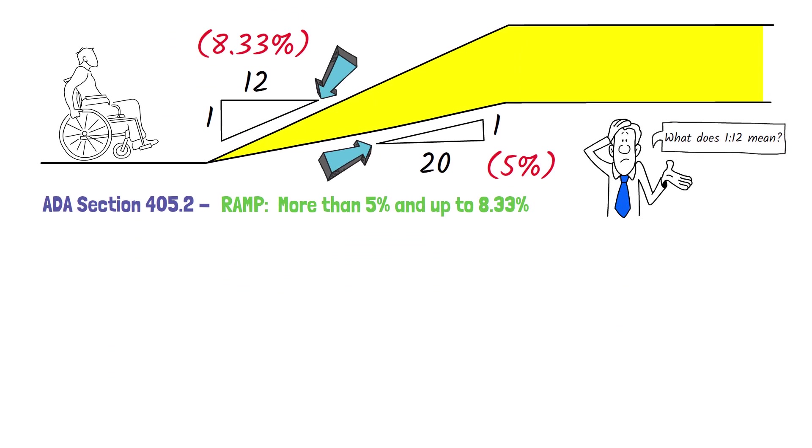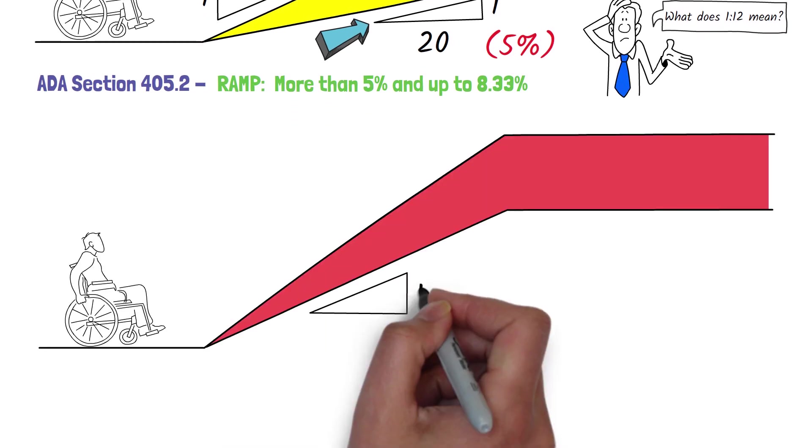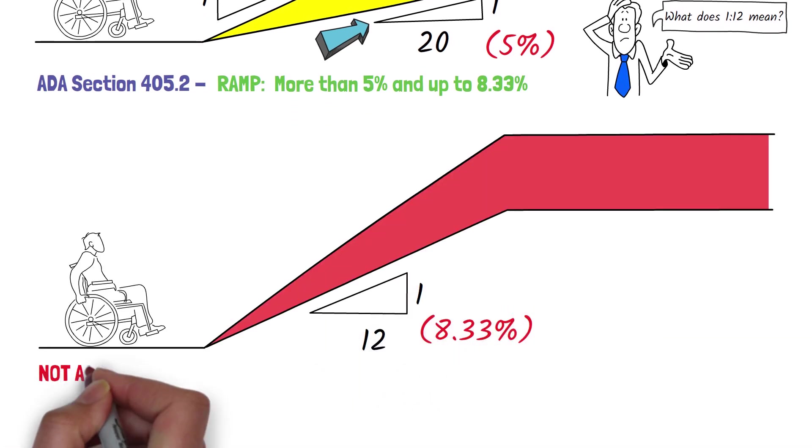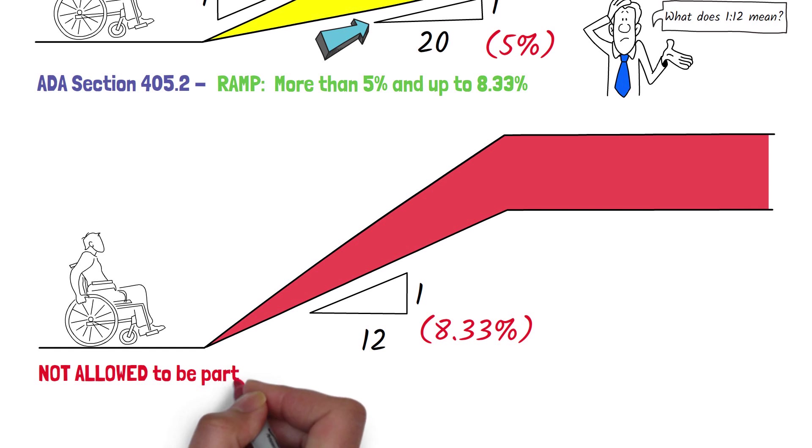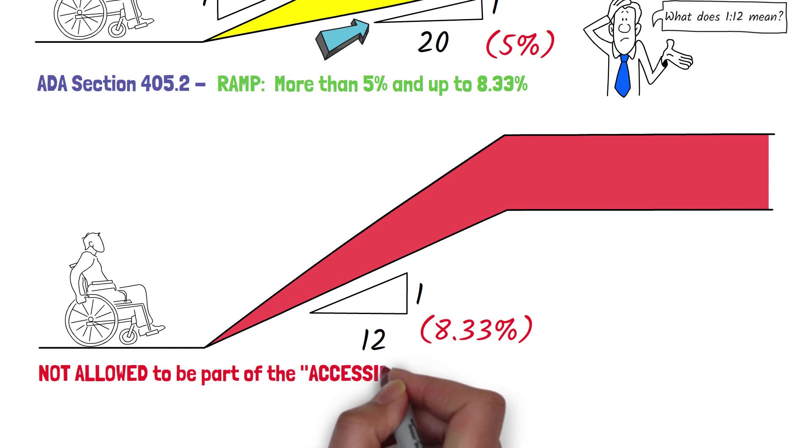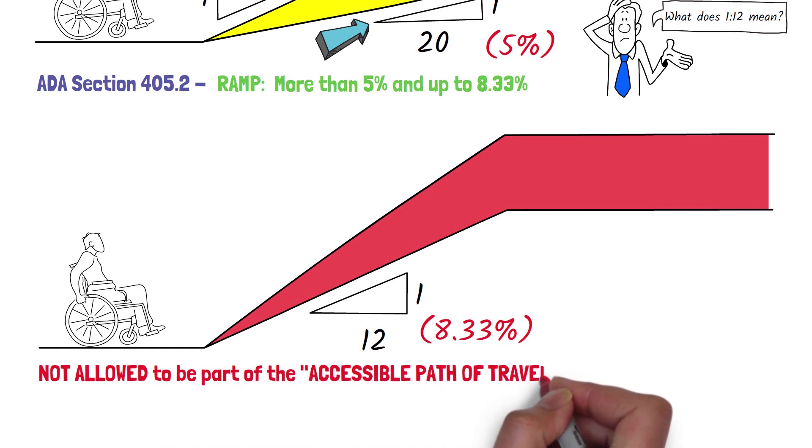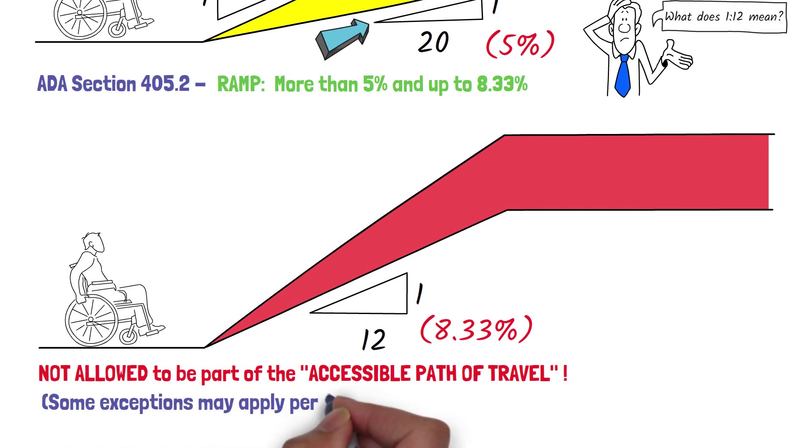What happens if you have a path of travel that is steeper than 1 in 12? Well, simply put, that does not meet ADA requirements and it will not be allowed as part of an accessible path of travel. ADA Section 405.2 allows for some limited exceptions, but they are so rare that we won't discuss it today.